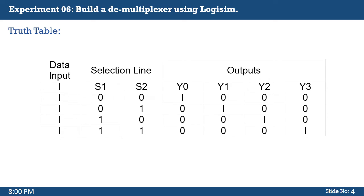In the truth table, when both selection lines are zero, only Y0 gives a high output and the remaining three output lines are zero. When the selection lines are in other combinations, either Y1 or Y2 will give a high output line and the others are zero. When both selection lines are one, that is both are activated high, Y3 will be one.